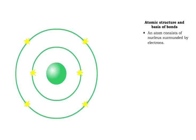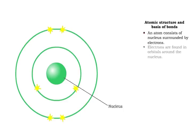An atom consists of a nucleus surrounded by charged particles called electrons. The electrons exist in various layers surrounding the nucleus, called orbitals.